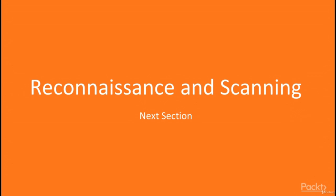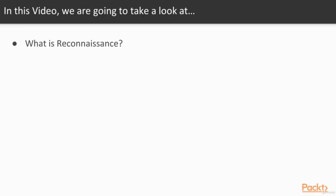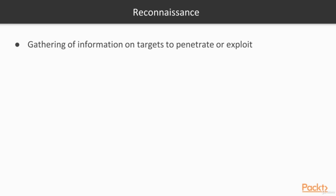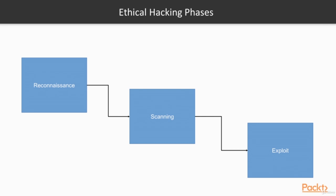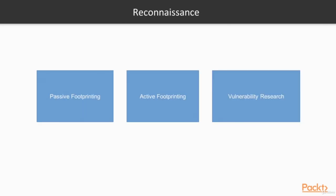In our next section we're going to take a look at Reconnaissance and Scanning. Reconnaissance is the gathering of information on targets to penetrate or exploit using various methods. We're going to break up ethical hacking into three phases: reconnaissance being the first, scanning being the second, and exploitation the third. Reconnaissance can be further split into three sections: Passive Footprinting, Active Footprinting, and Vulnerability Research.